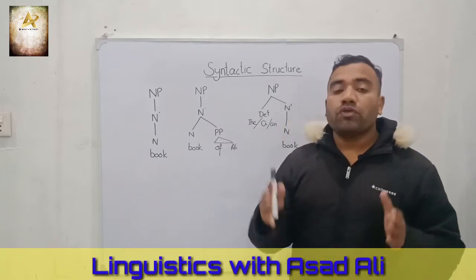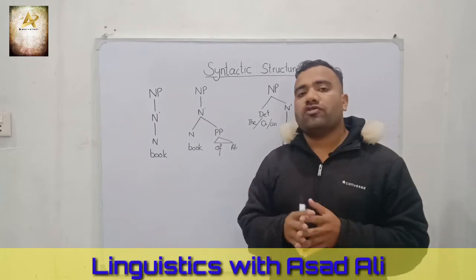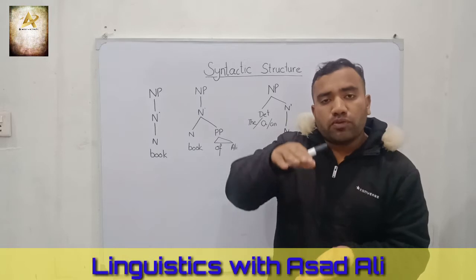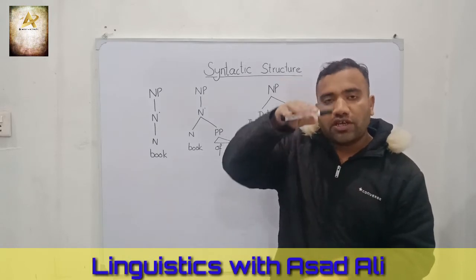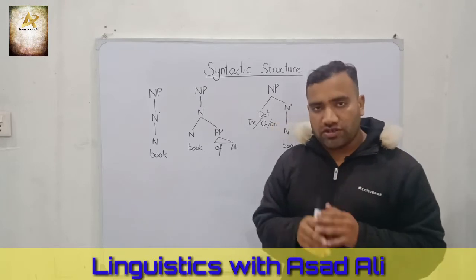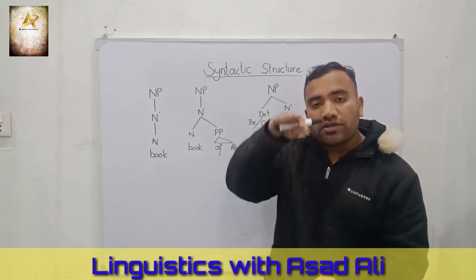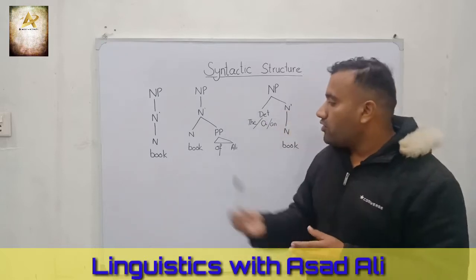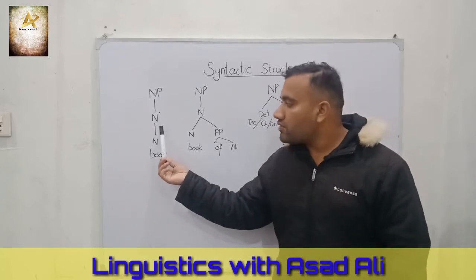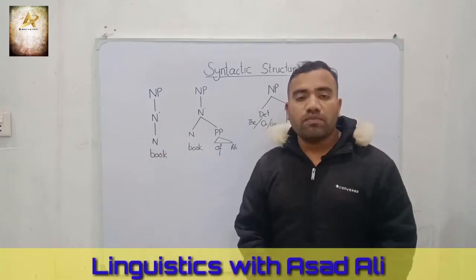Let's see the first structure of a phrase. In X-bar theory, we have discussed that there are three projection levels of every syntactic category. Our first structure fulfills the three levels of X-bar theory. First, minimal level. Second, intermediate level. Third is maximal level.